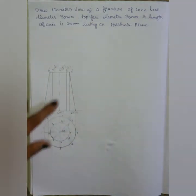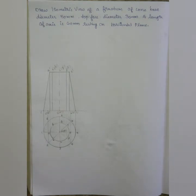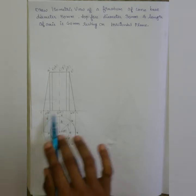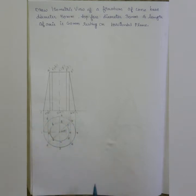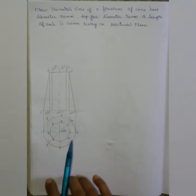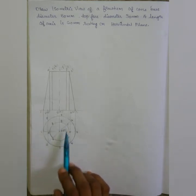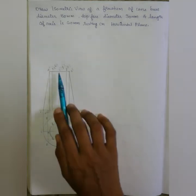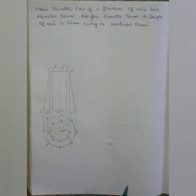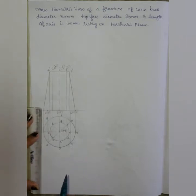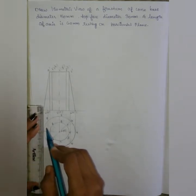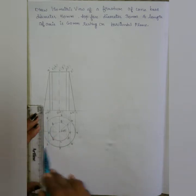Now we have the front view. This is the top view. This is the frustum — it's the shape of the frustum. The top view is the front view. Now we have an isometric view shape. Now we have a rectangle enclosed. So we have a cylinder — we have a rectangle with two circles, one on top and one on bottom.